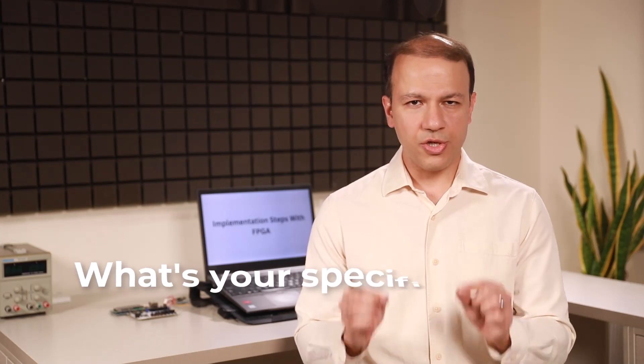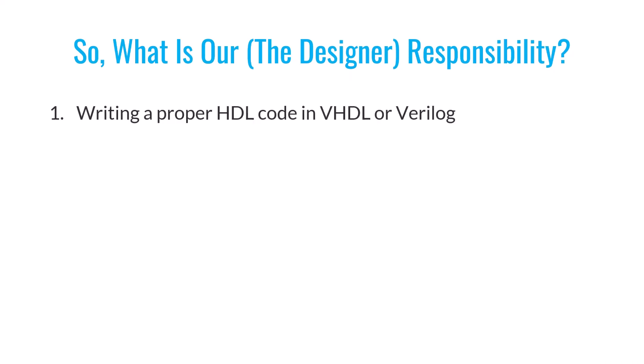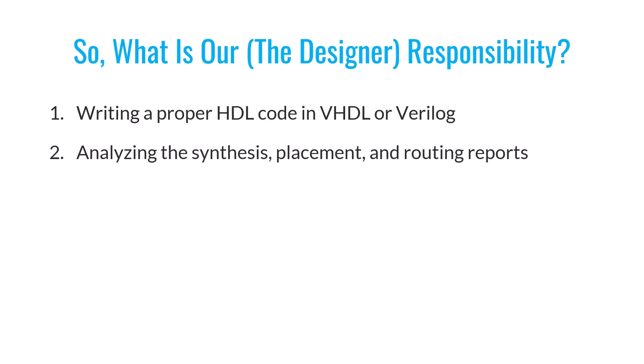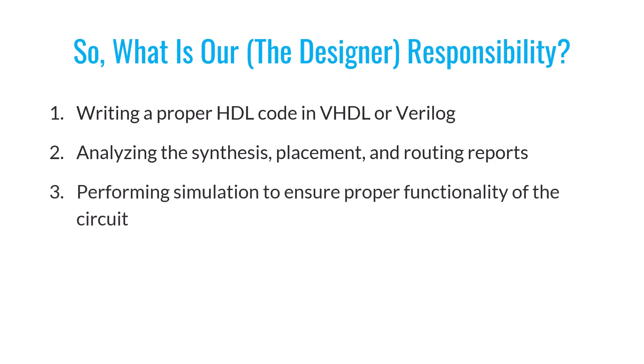You might wonder: with all these stages handled by implementation software, what's your specific role as an FPGA designer? You have four key responsibilities. First, write hardware description code using VHDL or Verilog. Second, review the results from the critical stages of synthesis, placement, and routing — the software provides detailed reports after each stage so you can make sure everything is going as planned. Third, run simulations after each major step to make sure your design functions correctly. Simulating your design and comparing results with desired outcomes is one of your most important tasks.